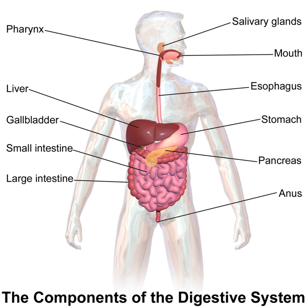A crop, or croup, is a thin-walled expanded portion of the alimentary tract used for the storage of food prior to digestion. In some birds it is an expanded, muscular pouch near the gullet or throat. In adult doves and pigeons, the crop can produce crop milk to feed newly hatched birds. Certain insects may also have a crop or enlarged oesophagus.